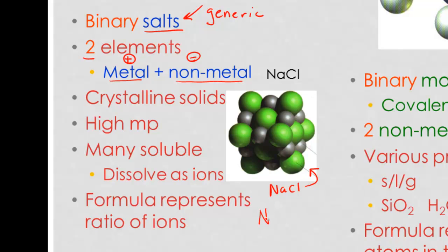For example, NaCl dissolves as sodium ions and chloride ions. The sodium ions are the little grey ones and the chloride ions are represented by the larger green ones. If they dissolve as ions.